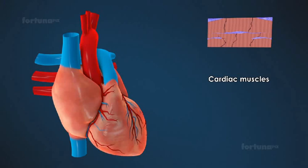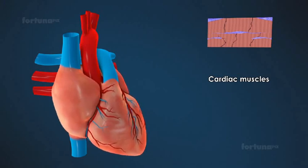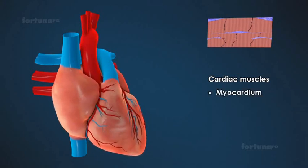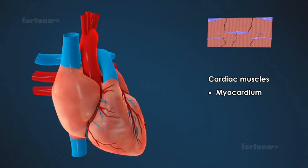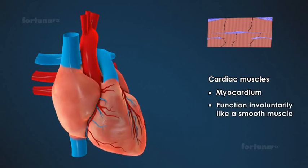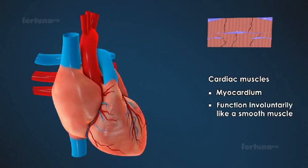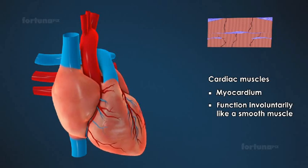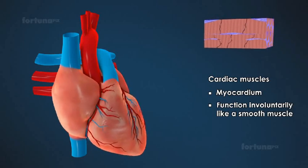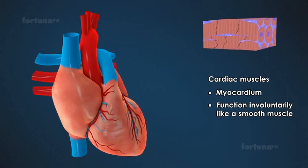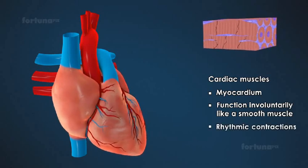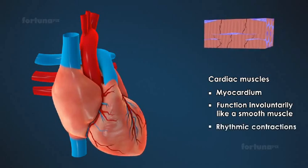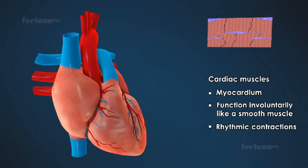Cardiac muscles are only found in the heart as myocardium. They are striped like skeletal muscle cells but function involuntarily like smooth muscle. Cardiac muscles are responsible for the rhythmic contractions of the heart. Unlike skeletal and smooth muscles, cardiac muscles do not fatigue.